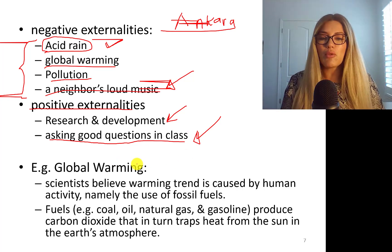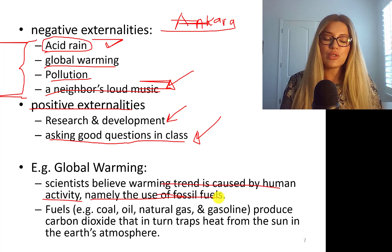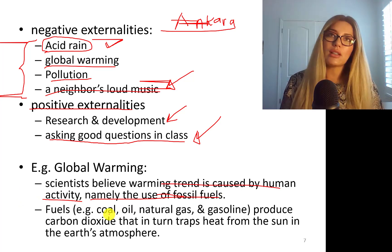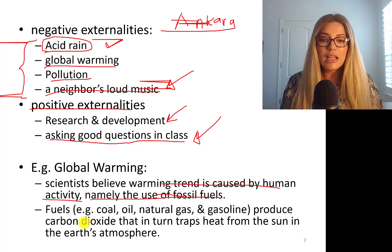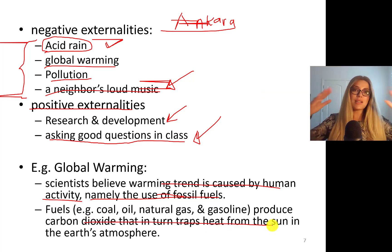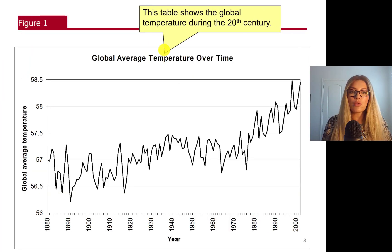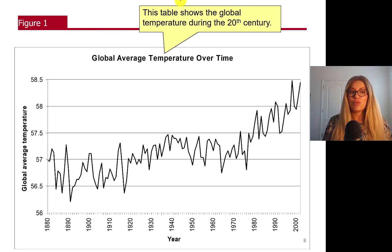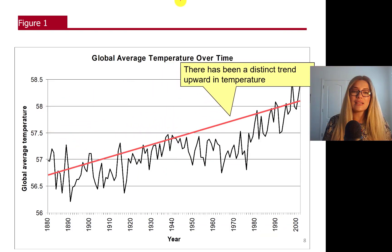Scientists believe the warming trend is caused by human activity — namely the use of fossil fuels such as coal, oil, natural gas, and gasoline, which produce carbon dioxide that traps heat from the sun in the Earth's atmosphere. The data shows global temperatures during the 20th century, and there has been a distinct upward trend in temperature.